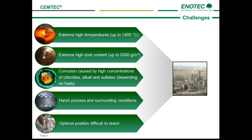The challenges in this application are clear: high temperatures above 1,000 degrees, dust concentration of up to 2,000 grams per cubic meter, high concentrations of chlorides, alkaline, and sulfates depending on the fuel used. This can lead to corrosion of the equipment and harsh ambient conditions. Last but not least, an optimal probe position for reliable process values from the kiln is required. Now let me explain how we at Enotech have continuously developed our CEMTEC system in order to overcome all of these challenges.